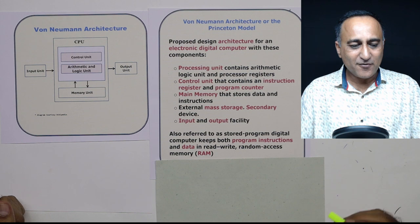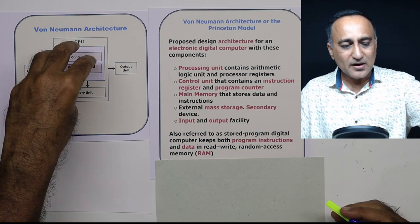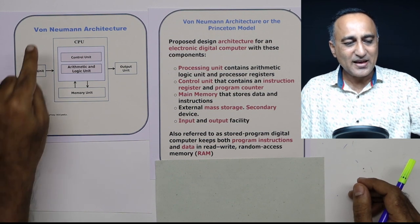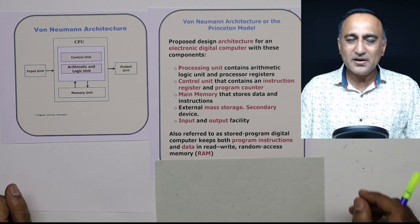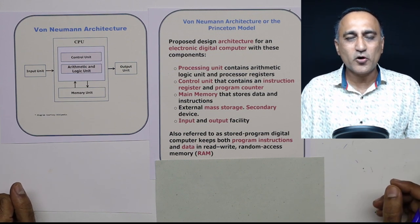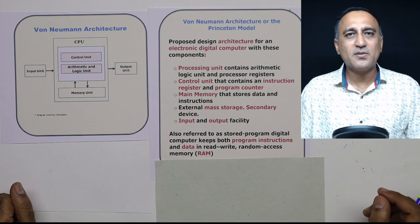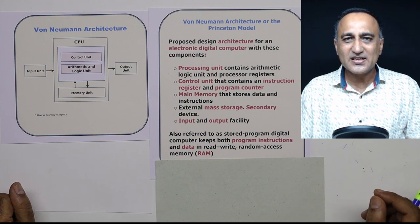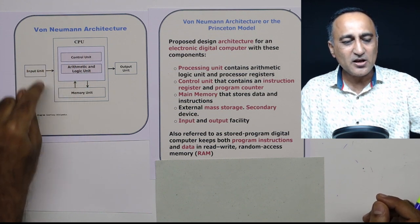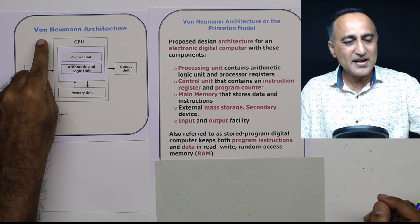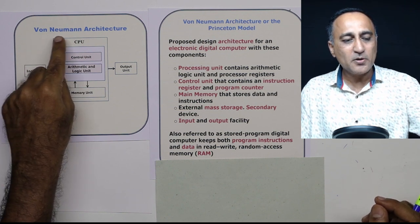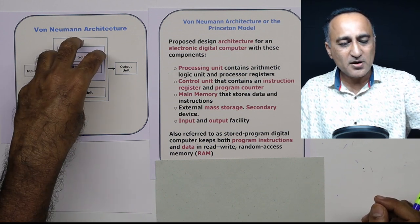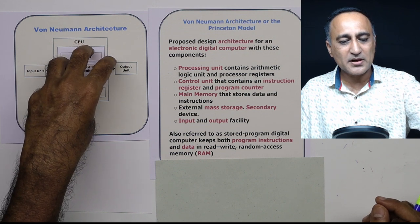I hope this clarifies why the modern computer has these components. The reason for having these components is thanks to this gentleman von Neumann, though the idea is not considered to be originally his — but by another brilliant scientist called Alan Turing. Alan Turing, around 1936-37 during his PhD, had proposed something very close to it, but the idea was made more popular by von Neumann.